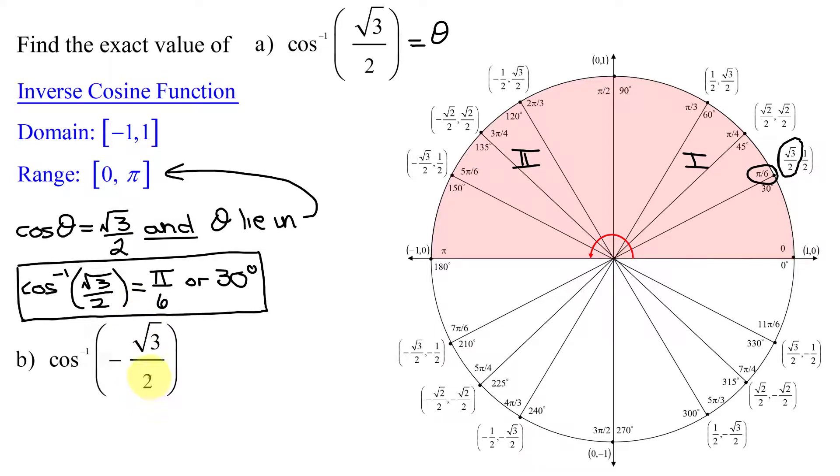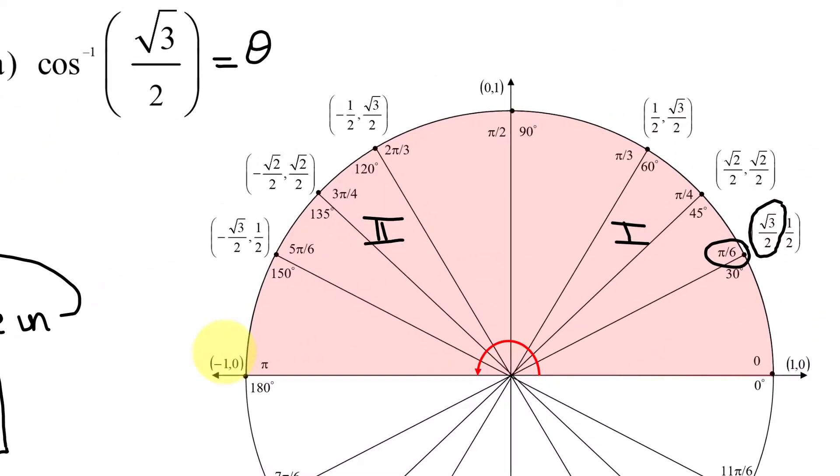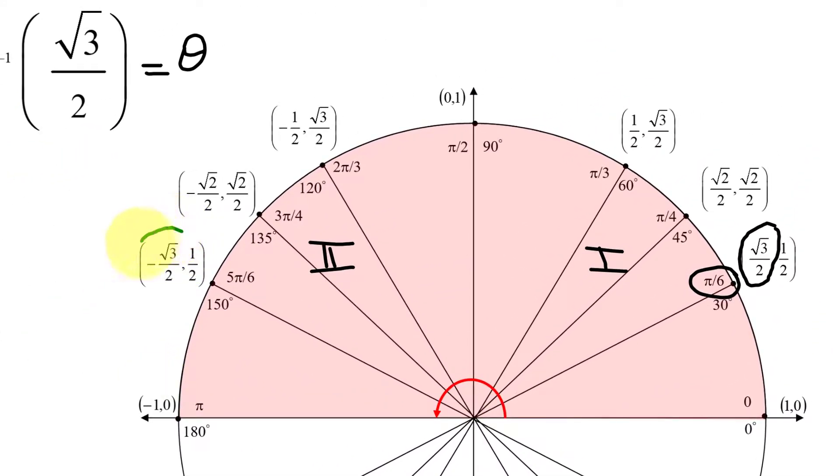In part B, this asks: find the angle in the restriction 0 to pi whose cosine is negative the square root of 3 over 2. If the cosine is negative under these restrictions, I have to be in quadrant 2, and here is the point